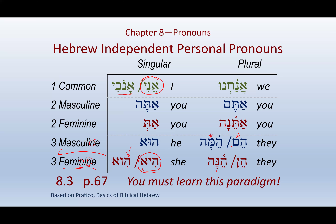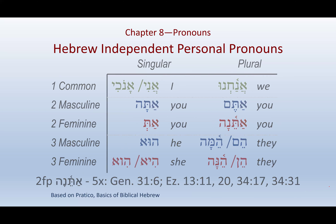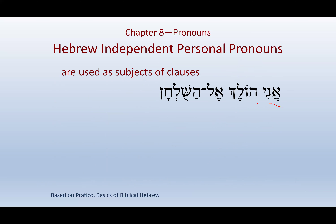Here's the note on the second feminine plural — Atena — it's only used five times: once in Genesis, and the rest in Ezekiel. Hebrew independent personal pronouns are used as subjects of clauses. For instance: Ani — 'I am walking to ha-shulchan,' the table — Ani is the subject of the sentence. The independent personal pronouns are used as subjects with predicate nominatives, which makes an A equals B type of statement.